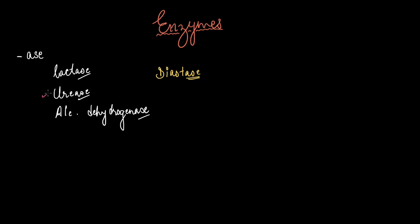The easiest and most popular way was to put -ase at the end of the substrate name. Let's take the example of urease, which converts urea into ammonia and CO2. Do you see how this urease name is derived by using -ase after the substrate name?